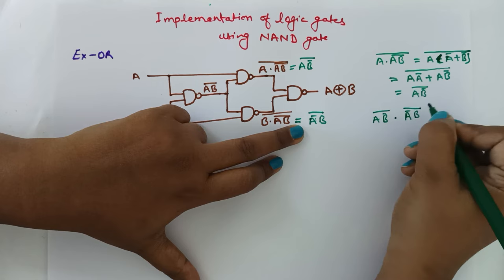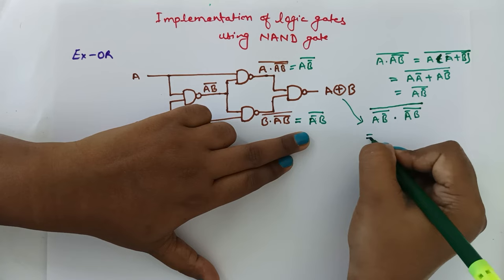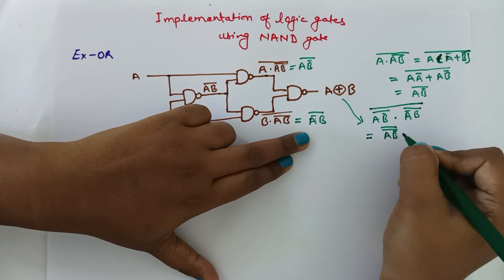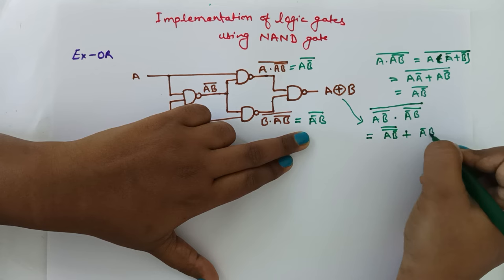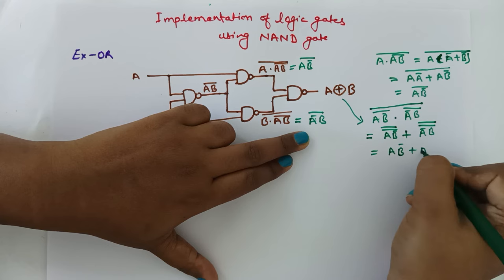Applying De Morgan's law to this, we can write it as AB bar whole bar whole bar plus A bar·B, which gives AB bar plus A bar·B. We know this is A XOR B.